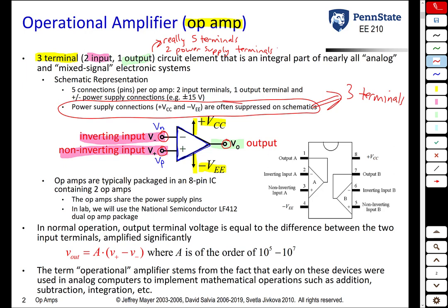Op-amps are typically packaged in an 8-pin integrated circuit which contains two op-amps. In our lab we're going to use the National Semiconductor LF412 Dual Op-amp Package. Pins 2 and 3 are the inverting and non-inverting terminals respectively of op-amp A, and pin 1 is the output for op-amp A. Terminals 6 and 5 are the inverting and non-inverting inputs of op-amp B, and the output is pin 7. The two op-amps in the IC share a power supply connection, with VCC connected to pin 8 and VEE connected to pin 4.